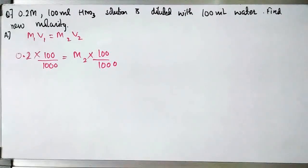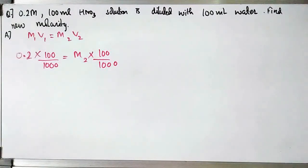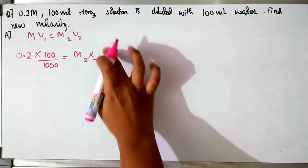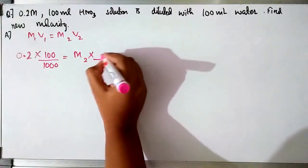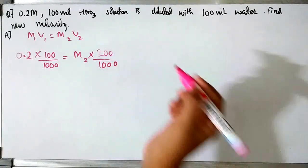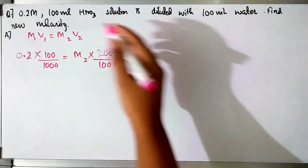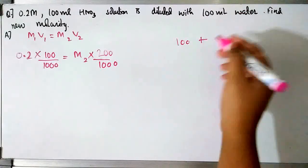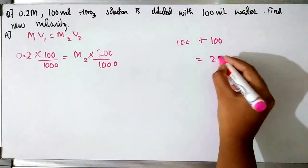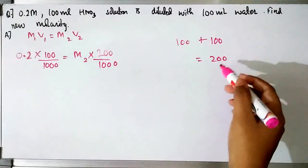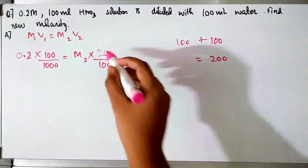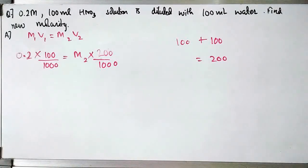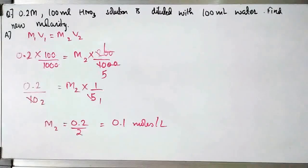We won't take V₂ as 100ml — we will take it as 200ml. Because HNO₃ was diluted with water: 100ml of HNO₃ plus 100ml of water gives a new volume of 200ml. So we use V₂ = 200ml, and when we solve M₁V₁ = M₂V₂, we get the new molarity to be 0.1 moles per litre.